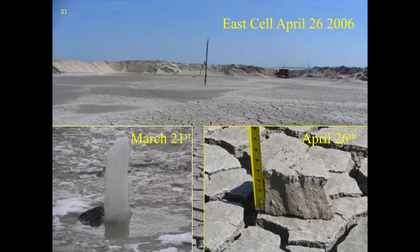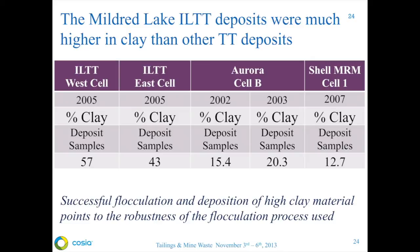These deposits were fully instrumented for temperature, settlement, and pore pressure. Samples were taken at several intervals, and because of the rapid fill and the expression of water through the deposit over the winter, essentially no freezing into the solid zone occurred. But in the warm dry spring of 2006, a considerable crust formed within a few weeks. The observed consolidation behavior was used to set model parameters for a deep deposit commercial-type deposit, and the model results compared with other parameters derived from conventional thickener deposits. We wanted to see how these results lined up with clay content. The Aurora Thickener demonstration deposits from 2002 and 2003 and the Shell Cell 1 test deposits were used for comparison — you can see the wide range of clay contents in these deposits. Successful flocculation and deposition of the high clay material in the ILTT points to the robustness of the flocculation process used for that demonstration.